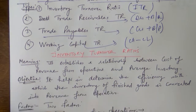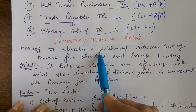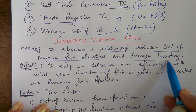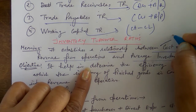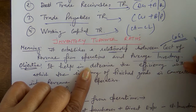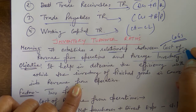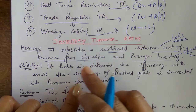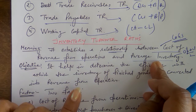Let us start with the very first — inventory turnover ratio (ITR). It establishes a relationship between cost of revenue from operations and average inventory. Cost of revenue from operations is also called cost of goods sold (COGS). The formula involves cost of revenue from operations divided by average inventory, where average inventory is opening plus closing inventory divided by 2.